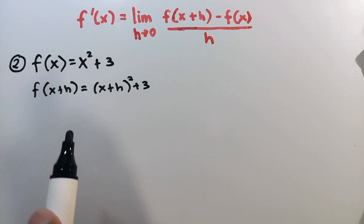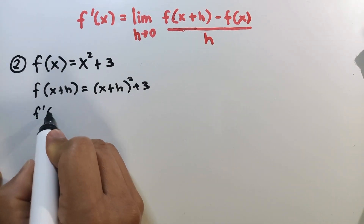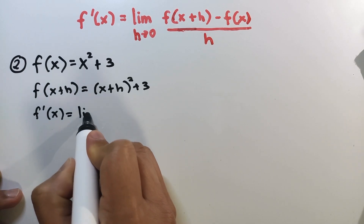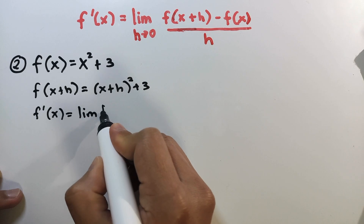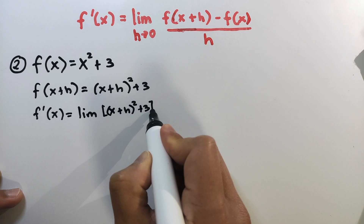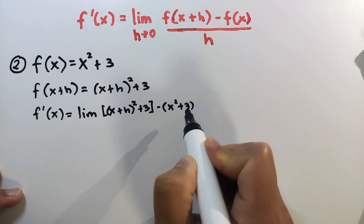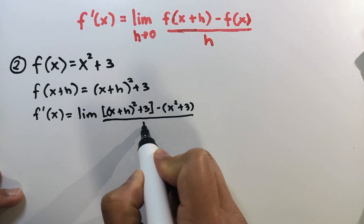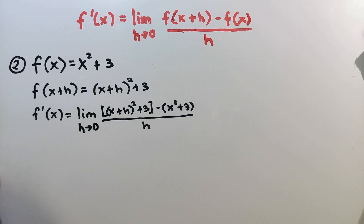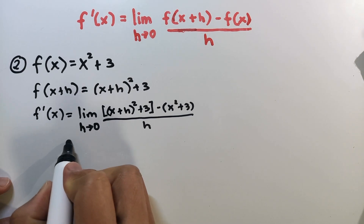The next step is to plug in the functions. So f prime of x is equal to the limit of f of x plus h, which is x plus h squared plus 3, and then minus f of x, the given function, over h as h approaches 0. If we evaluate the limit as h approaches 0, we'll get the indeterminate form 0 over 0, so we need to simplify to get the real limit.